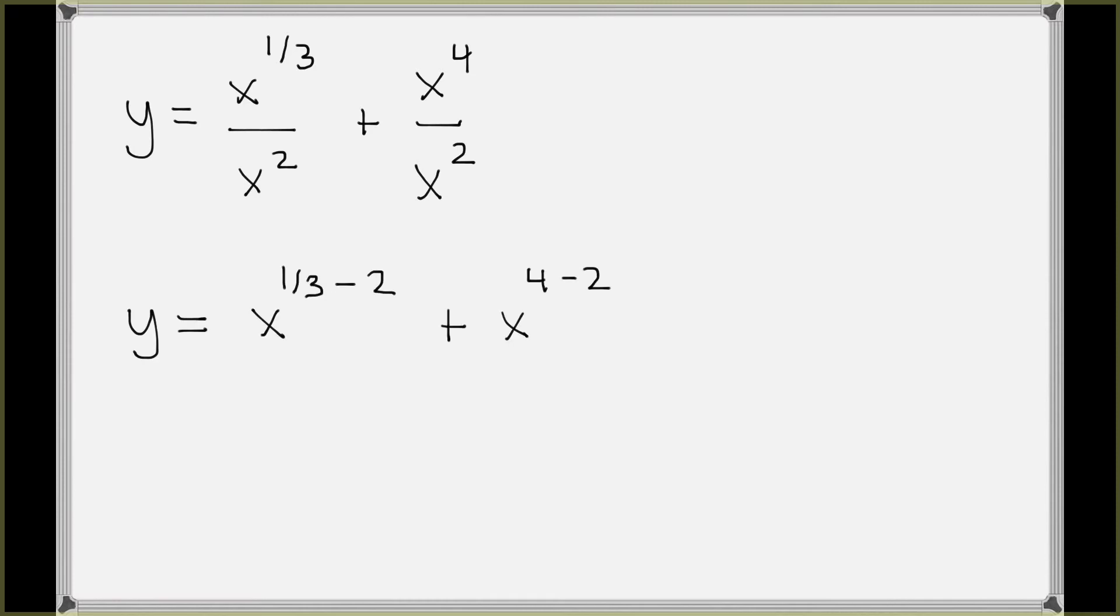And so what you're going to wind up with is the following. I normally don't put this step in when I'm doing it myself, but just to kind of illustrate to you what's going on: x to the one-third divided by x squared would be x to the one-third minus two, because when you divide like bases you subtract the exponents. Same thing here: I have x to the fourth divided by x squared—that's going to be x to the four minus two.